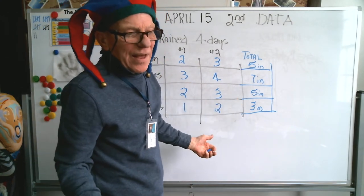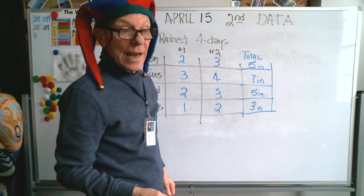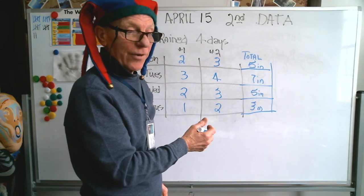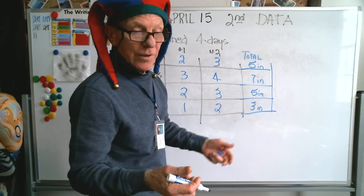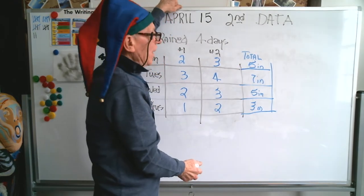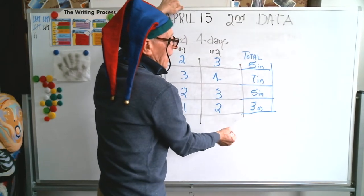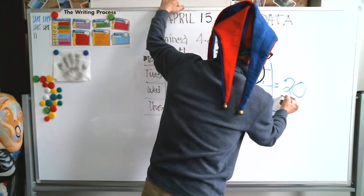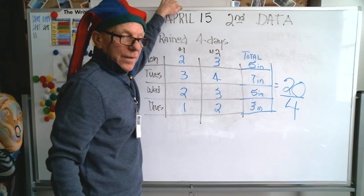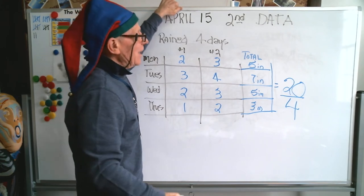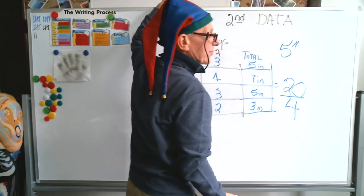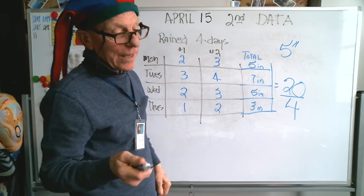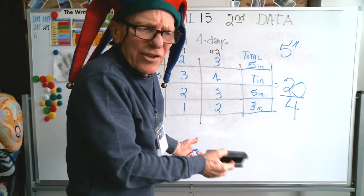Now let's figure out what the average rainfall over that four-day period was. How do you figure the average? You add the totals all together and divide by the number of different data points that you have. So there are four. We got five, seven, five, and three — altogether it rained 20 inches in four days. Because there are four entries of data, we divide by four, and it tells us the average amount of rainfall was five inches a day: 20 divided by four. Second graders, you may not be at that point yet, but I just wanted to show you there's a reason why you're learning this.